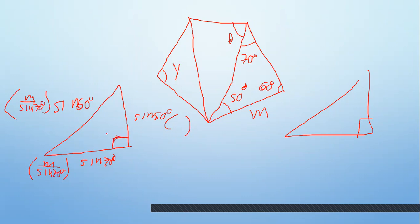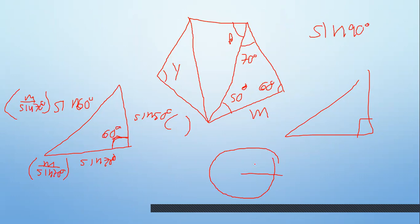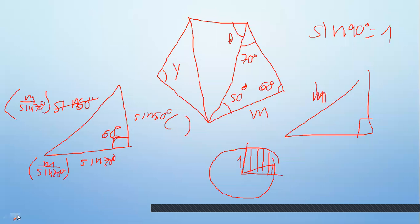Si yo tuviese 90, el seno de 90 grados, ¿cómo lo hallarían? Con la circunferencia trigonométrica. Theta va a medir 90 grados. Si el seno es la parte vertical y el ángulo crece hasta 90, la longitud llega hasta arriba: es la longitud del radio, 1. Entonces seno de 90 es 1. Si fuese seno de 60, es un número; si fuese seno de 90, desaparece. Espero que les haya gustado la clase y nos vemos para la próxima.